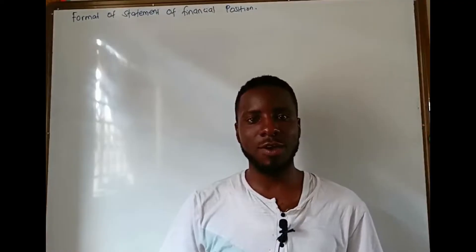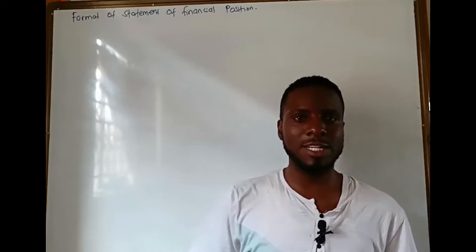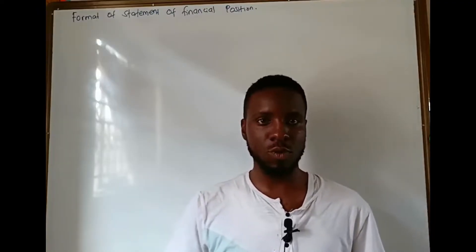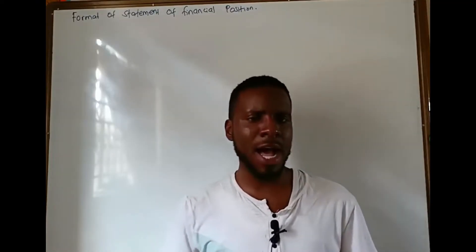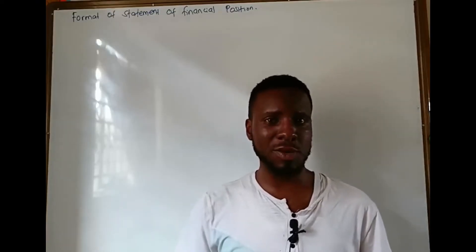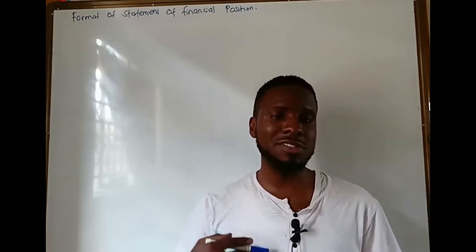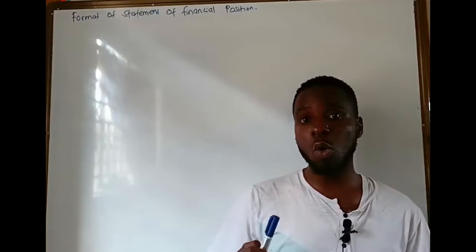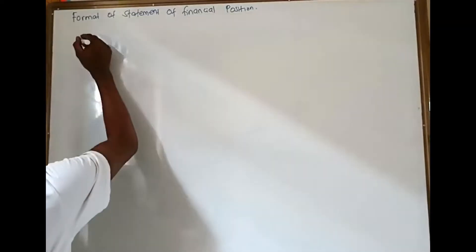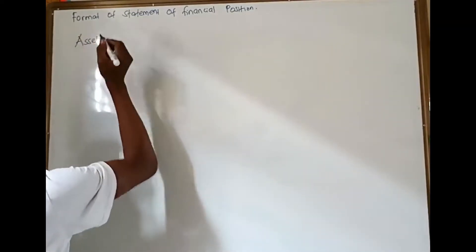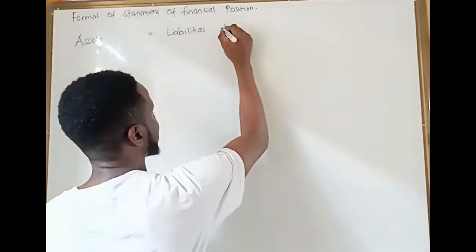Good day, you are welcome to another session of Kevin Davis Accounting. Today I would like us to look at the statement of financial position. We are still continuing with our topic of final accounts of a sole trader. Remember when I was introducing the accounting equation, I told you that from the accounting equation we can actually derive the statement of financial position, or what is formerly known as the balance sheet. Our accounting equation is: assets equals liabilities plus owner's equity.